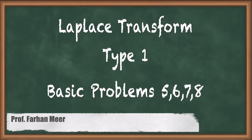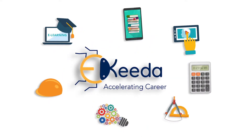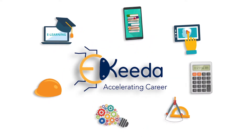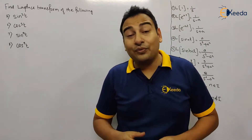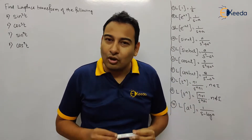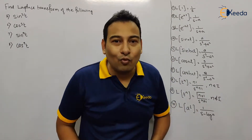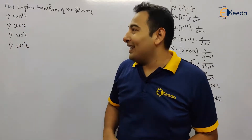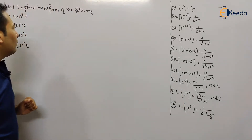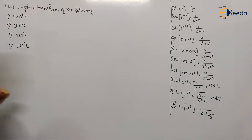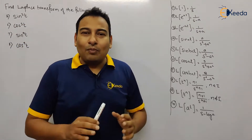Hello friends, in this video we'll be discussing Laplace transform type number one, basic problems, problem number five to eight. Welcome back students, let's move on and discuss further problems. In the last video we discussed the first four problems of Laplace transform. Now we'll move on and discuss problem number five to eight, which are type one — basic problems. Let's begin.